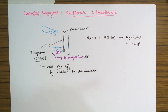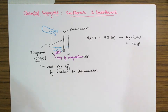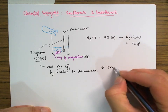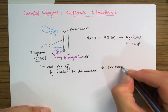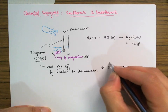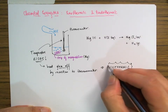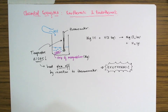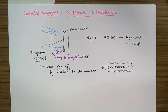In this sort of reaction where heat is given off from the reaction to the environment, we call this an exothermic reaction. That's the definition of an exothermic reaction: it's a reaction in which heat is given off from the reaction mixture to the environment.